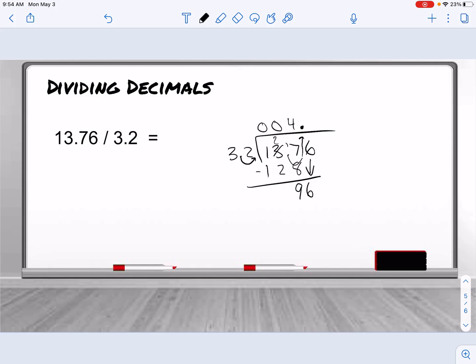Bring down our 6. 32 goes into 96 three times. 3 times 32 is 96. There's nothing left. So our answer is 4.3.